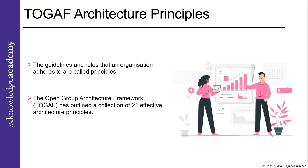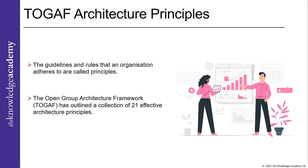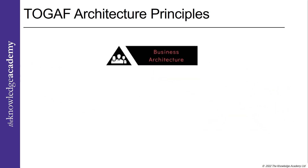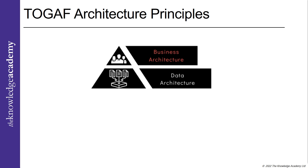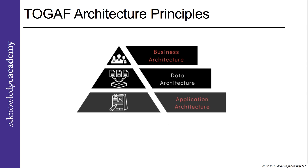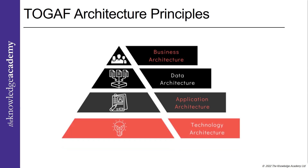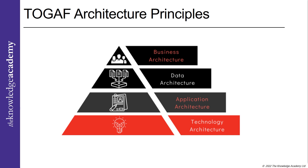The Open Group Architecture Framework, or TOGAF, has outlined a collection of 21 effective architecture principles. There are four distinct domains or subsets of TOGAF architecture principles: Business architecture, which deals with your business strategy and execution of business processes; Data architecture, which deals with the management and framework of the data resources; Application architecture, which deals with the personal application systems and how they operate with each other; and Technology architecture, which deals with the prerequisites that are necessary to keep the enterprise operating smoothly.